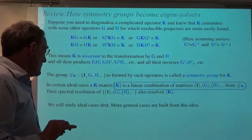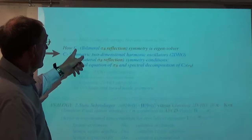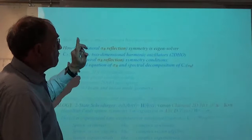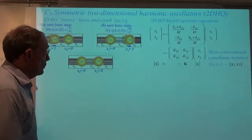This is the simplest example of applied group theory, bar none. We're going to do ideal cases first; more general cases will be built as we go along. Our first thing to tackle is how bilateral sigma-B symmetry is an eigensolver — how do you make that happen? Other things connected with that will be shown as well.